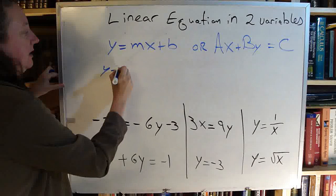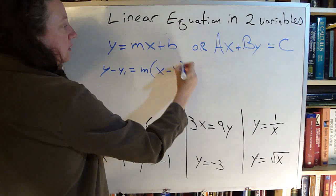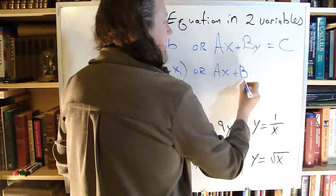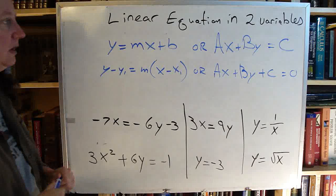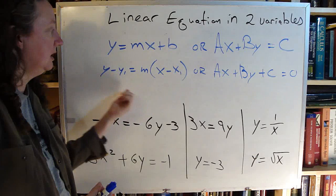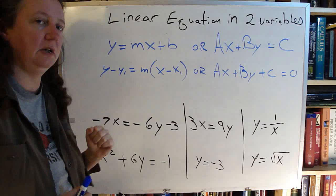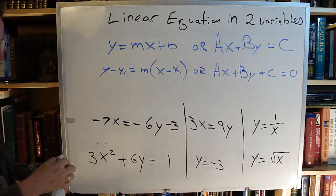There are other formats you can see them written in, such as y minus y1 equals m times open parenthesis x minus x1 close parenthesis, or you may see it written as Ax plus By plus c equals zero. If you took algebra in high school, you're familiar with this. This is the point-slope equation. This is the slope-intercept equation, and those are the general and standard forms.